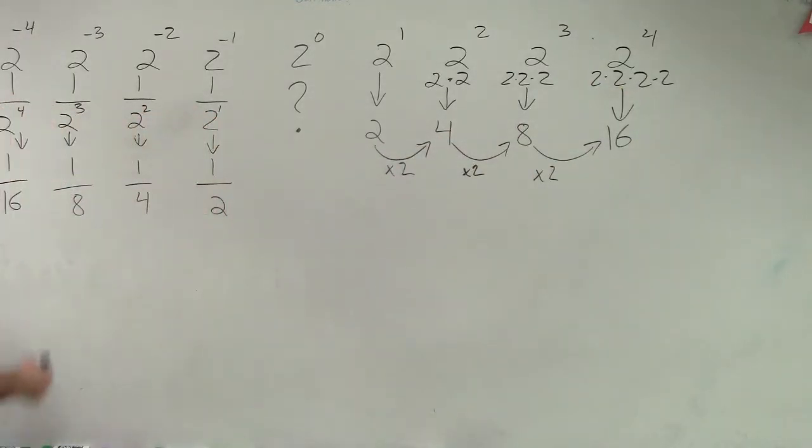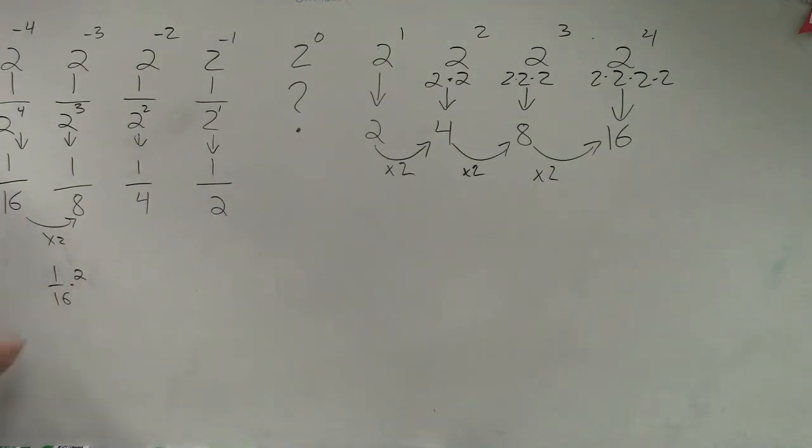Let's go back over here. From here to here, what am I multiplying by? Times 2. 1 over 16 times 2 equals 2 over 16, which reduces down to 1 over 8. Does everybody agree with me? This is the very important part.